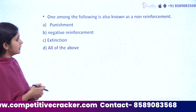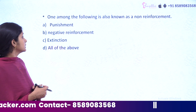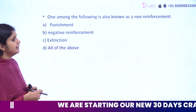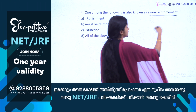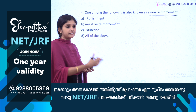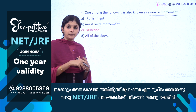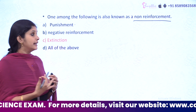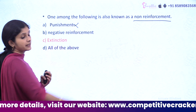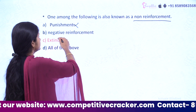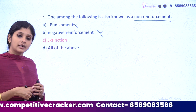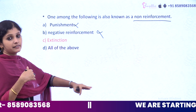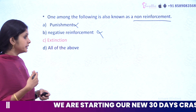One of the following is also known as Non-reinforcement — options: Punishment, Negative reinforcement, Extinction, All of the above. Non-reinforcement — what is it? The answer is Extinction. Punishment is not non-reinforcement. Negative reinforcement is the opposite of non-reinforcement. Option C is Extinction.